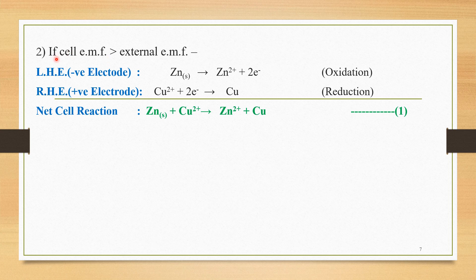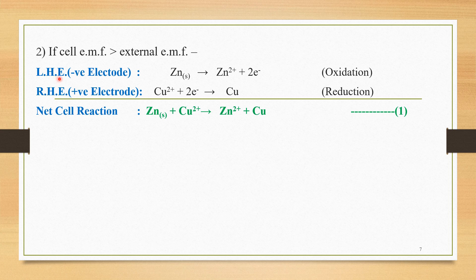The second case: if cell EMF is greater than the external EMF, current flows through the circuit and electrochemical cell reactions take place. At the left-hand (negative) electrode, oxidation occurs — the zinc electrode undergoes oxidation giving Zn²⁺ plus two electrons. At the right-hand (positive) electrode, reduction occurs — Cu²⁺ accepts two electrons and is converted to neutral copper.